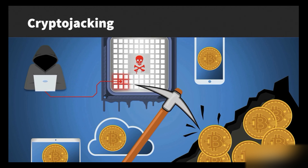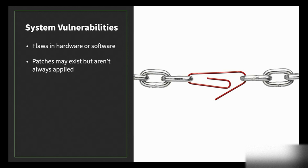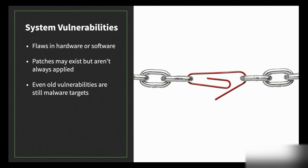Crypto jacking is a malware variant that exploits a vulnerable computer and uses its resources to mine cryptocurrency. There are two main ways systems become infected with malware. The first is system vulnerabilities — flaws in hardware or software that allow malware to get installed and function. Usually patches exist to fix these, but users and organizations don't always apply them in a timely manner. Even old vulnerabilities are still targeted: in 2020, a Microsoft vulnerability first identified back in 2012 was still on the FBI's list of the top 10 most exploited security flaws.